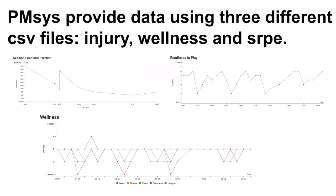The first and second columns show the number of entries in the dataset based on different types. The PMC's smartphone application provides three CSV files called Imagery, Wellness, and SRPE. Here you can see sample data records within these files for a selected user.